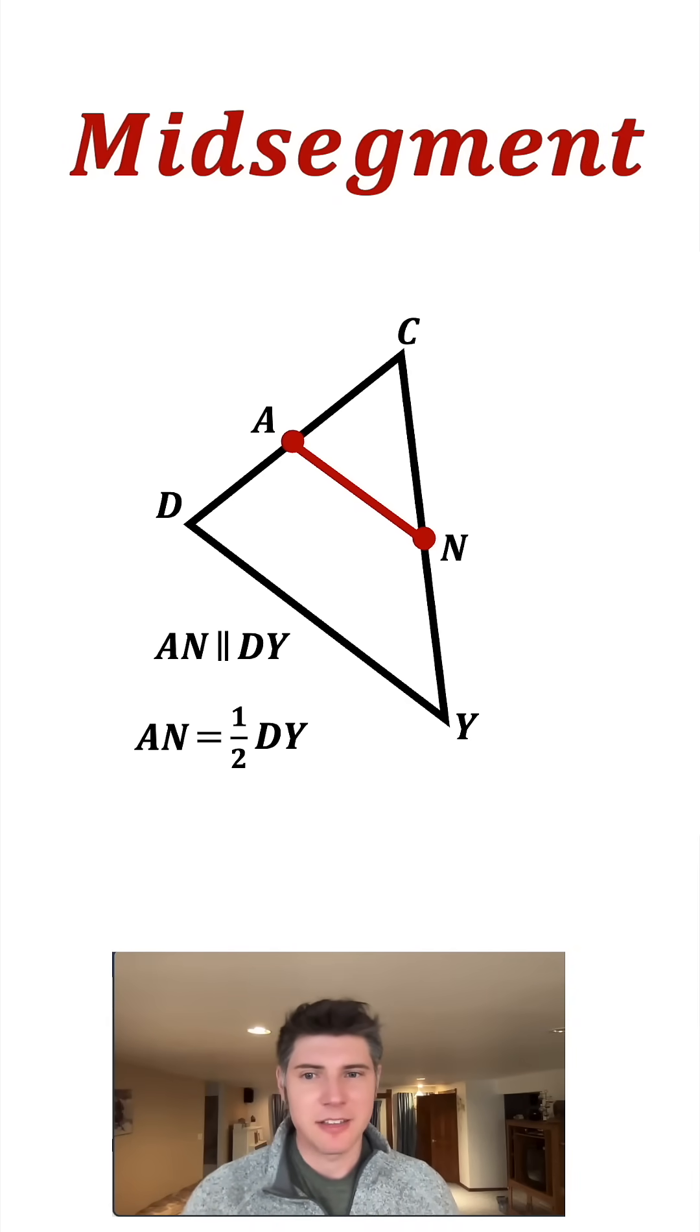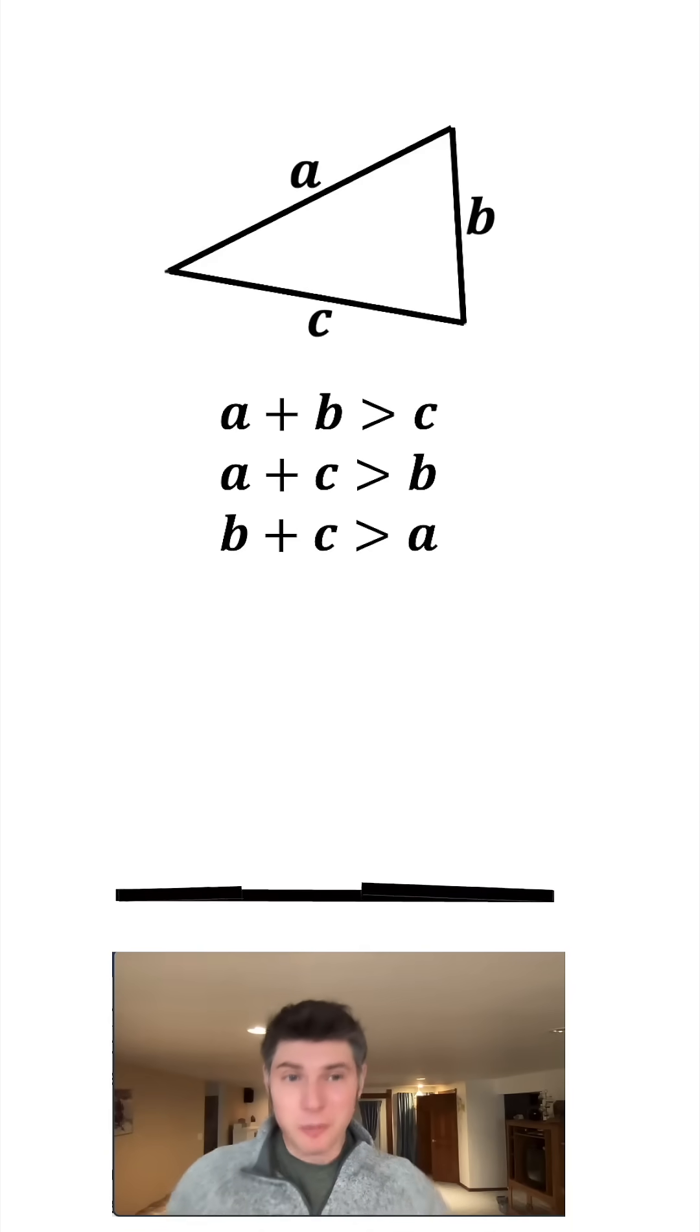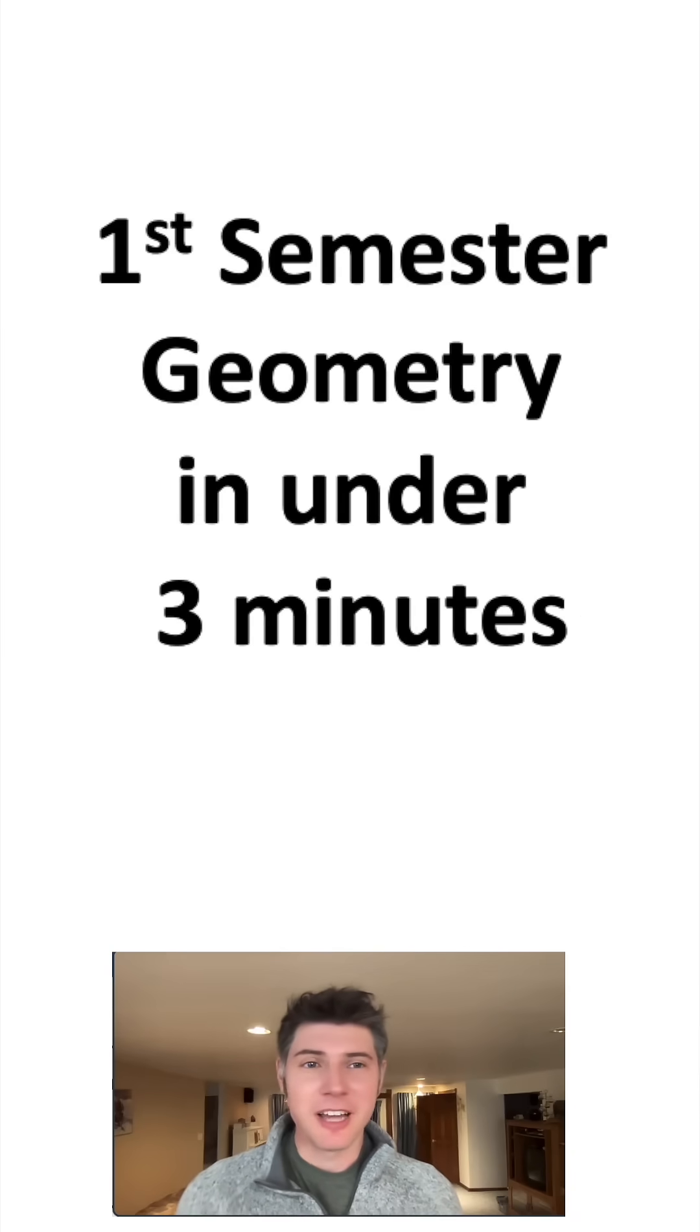There's even more about triangles. For every single triangle, the sum of the two smaller sides must be greater than the third. If not, they can't form a triangle, they won't reach each other. The largest side is always opposite the largest angle, and the smallest side is always opposite the smallest angle. And those are some of the highlights of first semester geometry. How exciting!